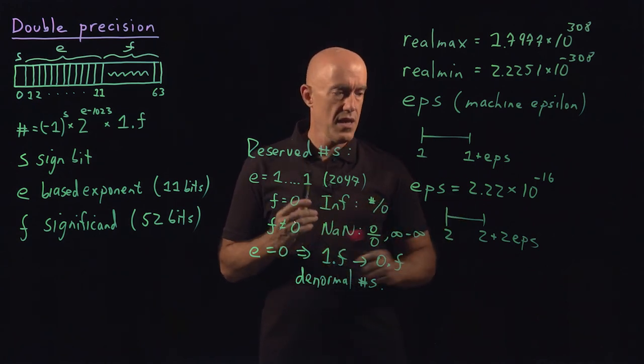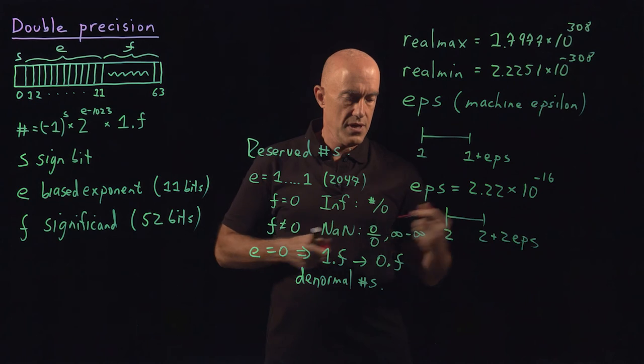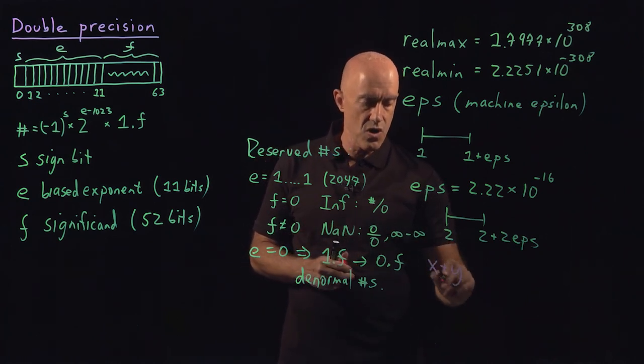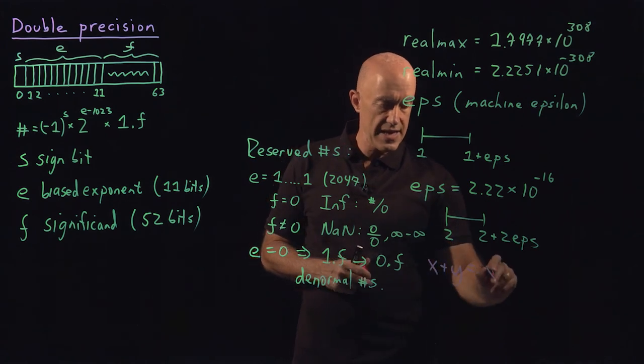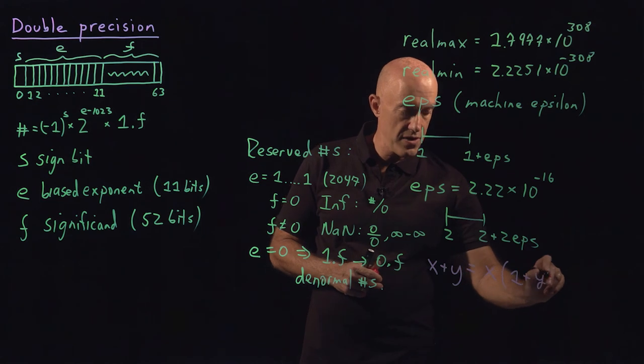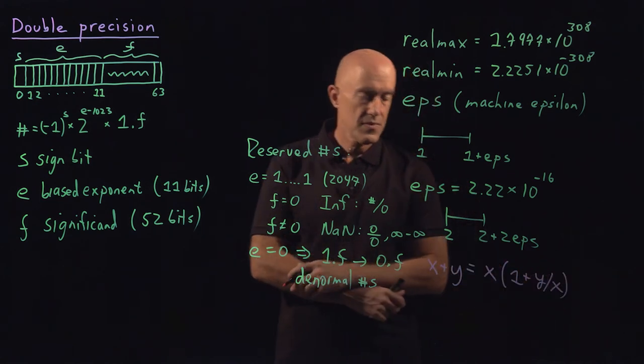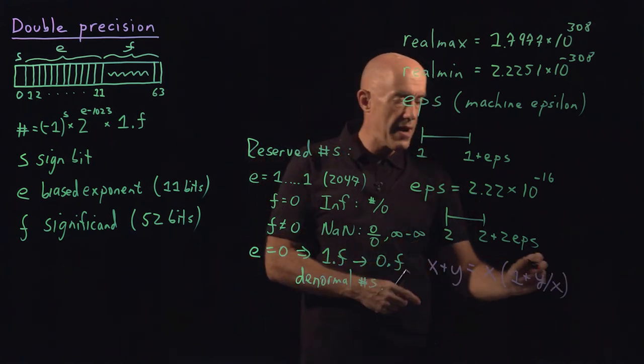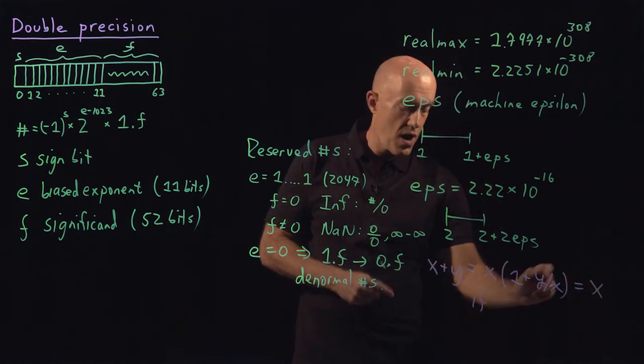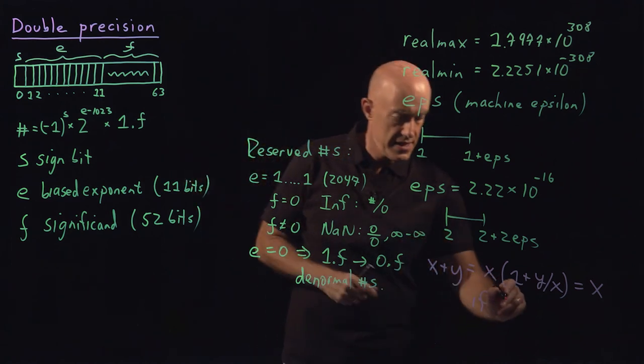Machine epsilon is very important because if you look at, say you're adding two numbers, x plus y, we can write that as x times 1 plus y over x. So we might get this equal to x if y over x then is, let's make it positive.